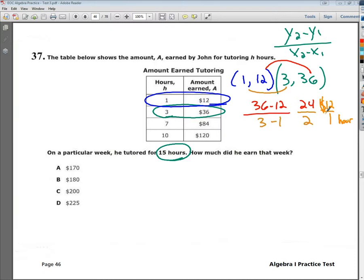Okay, so now that you know that every hour they're making $12 and it's asking you about 15 hours, you're going to take 15, multiply it by 12, and you're going to end up getting 180. So you're going to see that your answer here could be B.